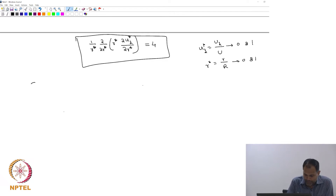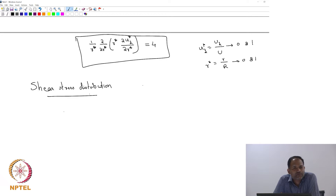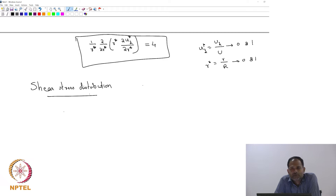The next thing is shear stress distribution. Shear stress is shear force per unit area — it is essentially nothing but the viscous forces. We want to calculate how shear stress is distributed, and looking at that is going to be a little more useful because it will tell you some nice detail about the flow.